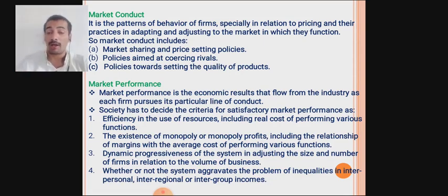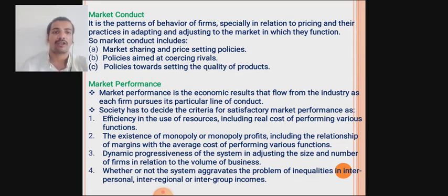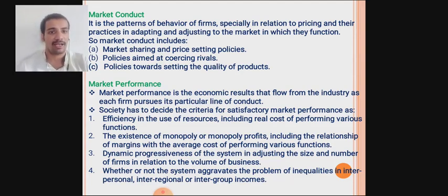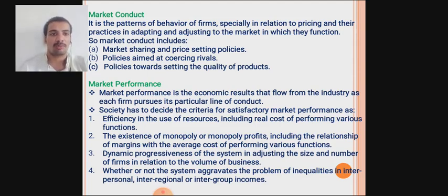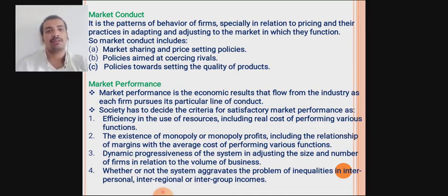Market performance is the economic result that flows from the industry as each firm pursues its particular line of conduct. Society decides the criteria for satisfactory market performance. These criteria include: efficiency in the use of resources and the real cost of performing various marketing functions such as advertising; the existence of monopoly or monopoly profits relative to average costs; dynamic progressiveness of the system in adjusting firm size and number relative to volume of business; and whether the system aggravates inequalities in interpersonal, interregional, or intergroup income. This concludes our discussion of market conduct and market performance. Thank you.